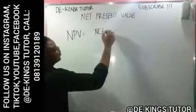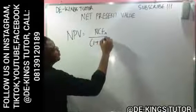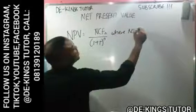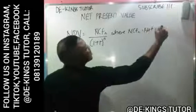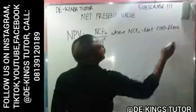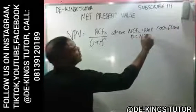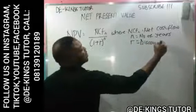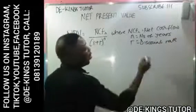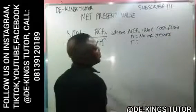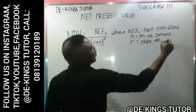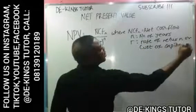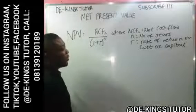The NPV is given by the formula: net cash flow divided by (1 + R) raised to the power of N. Where NCF is the net cash flow, N is the number of years, and R is the discount rate, or the rate of return, or the cost of capital.